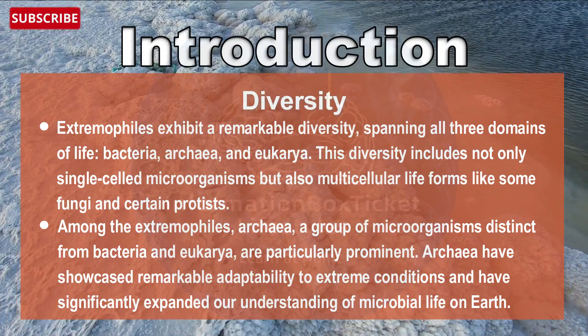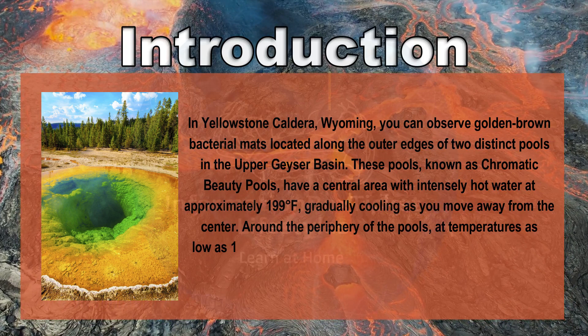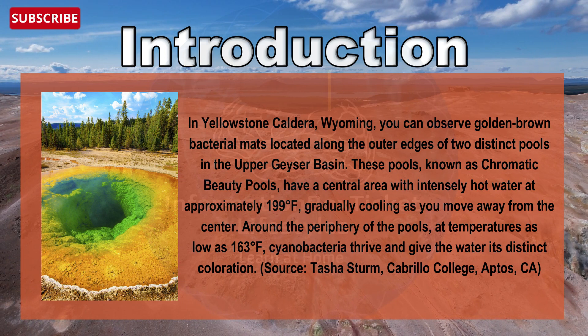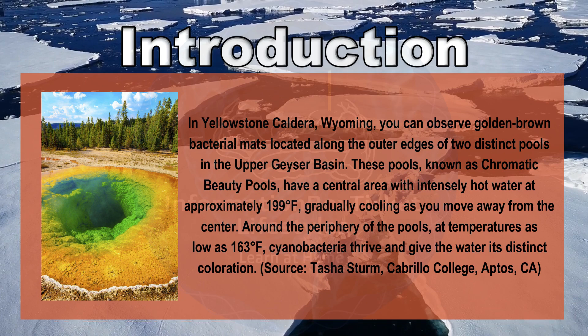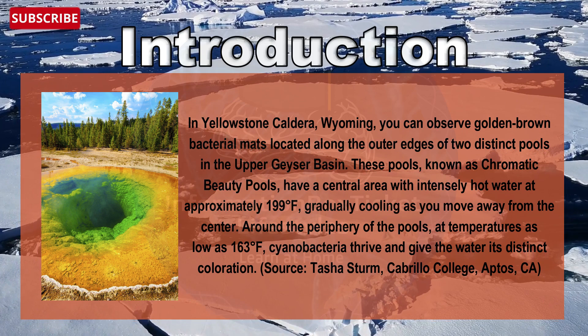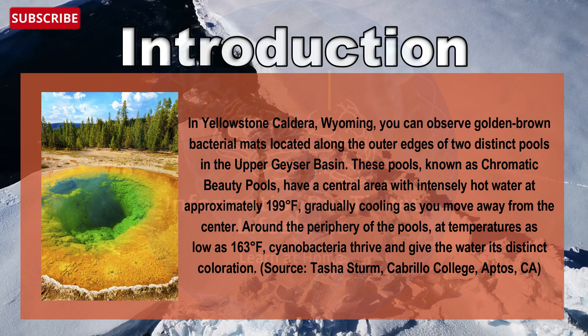In Yellowstone Caldera, Wyoming, you can observe golden-brown bacterial mats along the outer edge of two distinct pools in the upper geyser basin. These pools, known as Chromatic Beauty Pools, have a central area with intensely hot water at approximately 199 degrees Fahrenheit, gradually cooling toward the periphery. At temperatures as low as 163 degrees Fahrenheit around the peripheral, cyanobacteria thrive and give the water its distinct coloration.